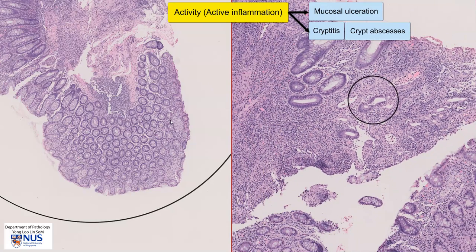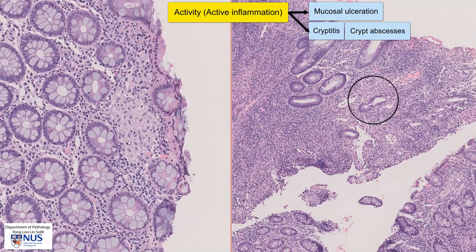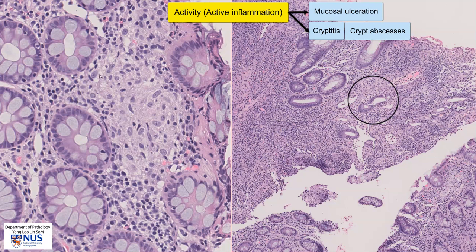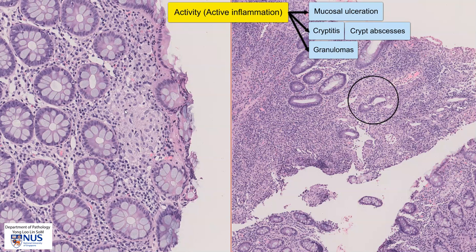Yet another feature of active inflammation is seen on the left picture. Here we can see a slightly pale aggregate of cells, and on higher magnification we can see that this is actually an epithelioid granuloma, where we can see epithelioid histiocytes with elongated slender nuclei and fairly abundant pale eosinophilic cytoplasm. The presence of granulomas not in association with damaged crypts is suggestive of Crohn's disease. Of course, we would also have to exclude infectious colitis, for example TB colitis or TB ileitis.